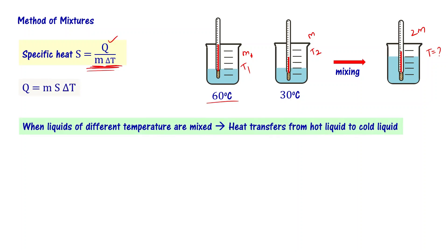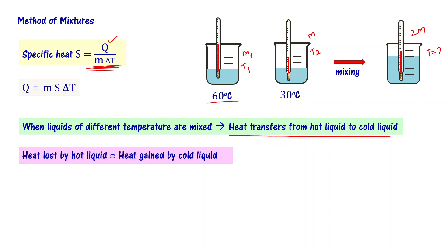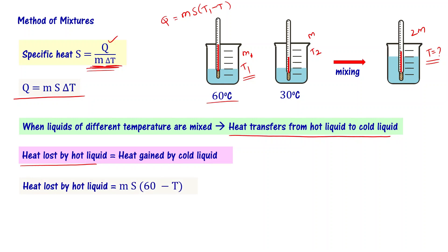We just learned that when liquids of different temperature are mixed, heat transfers from the hot liquid to the cold liquid. The hot liquid is going to lose heat and the cold liquid is going to gain heat. Heat lost by the hot liquid equals heat gained by the cold liquid. Heat lost by the hot liquid is M times S times (T1 minus T), where T1 is the initial temperature of the hot liquid and T is the final temperature.